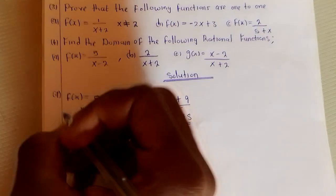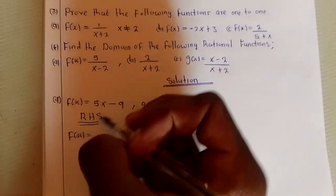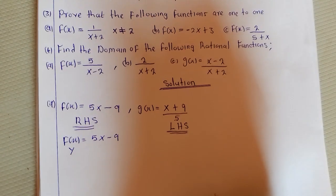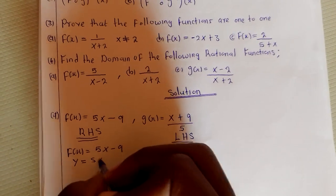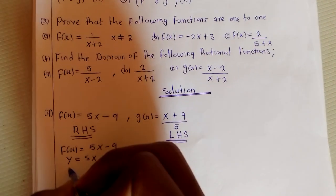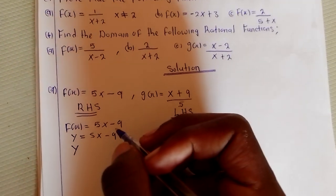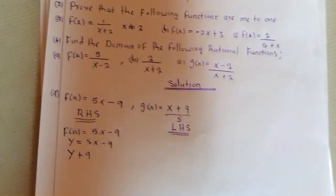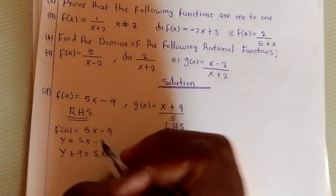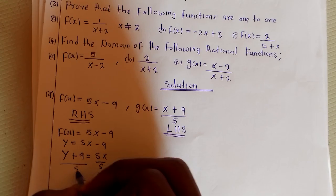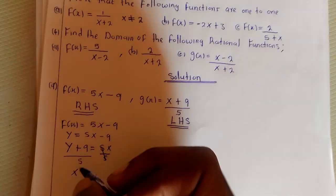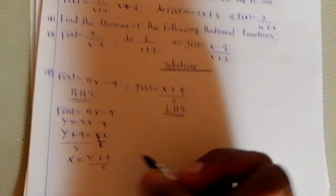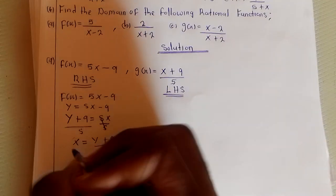I have the function f(x) = 5x - 9. I replace f(x) with y so that it becomes y = 5x - 9. Then we make x the subject. I can take this 9 to the other side so that it becomes y + 9 = 5x. Therefore x = (y + 9)/5.